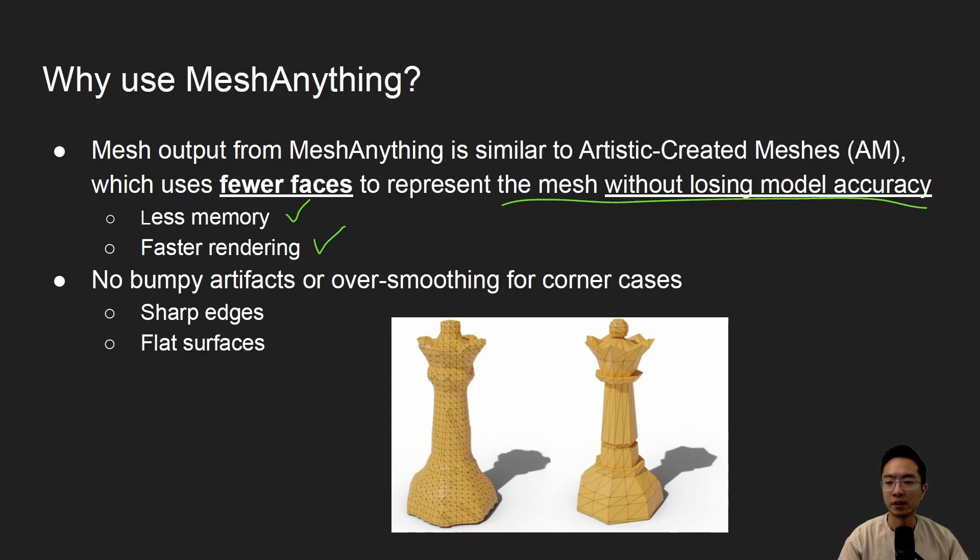And some other things that it helps with is no bumpy artifacts or over-smoothing for corner cases. So specifically, some things that it's good at is like sharp edges and flat surfaces. So here you can see it's an example of two rendering of a really fine Mesh to a simplified Mesh.